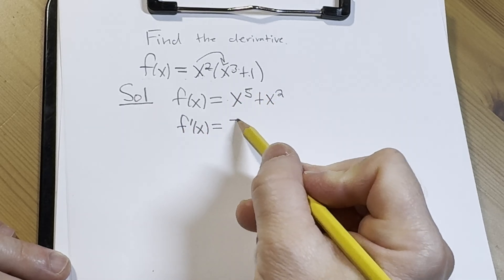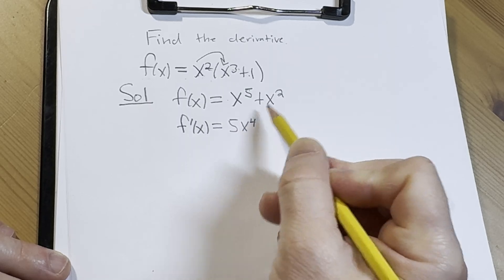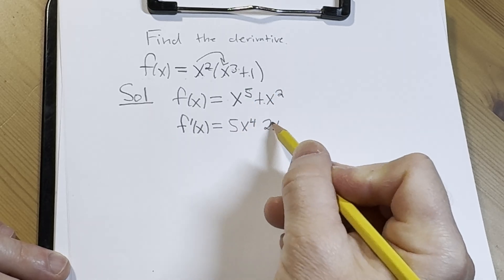so here we bring down the 5, so we get 5x to the 4th. Bring down the 2, so we just get 2x.